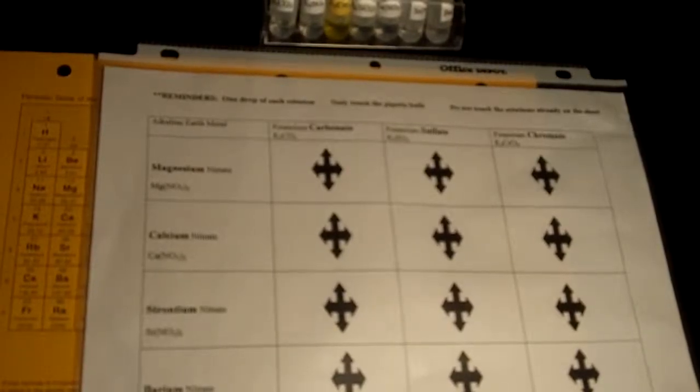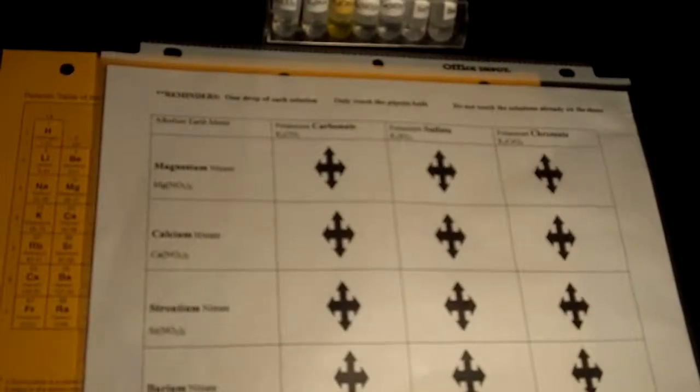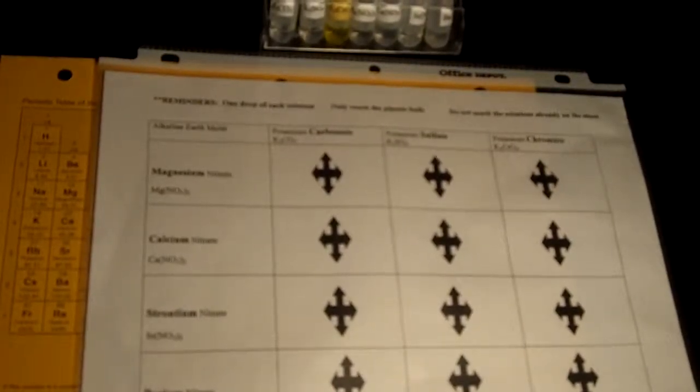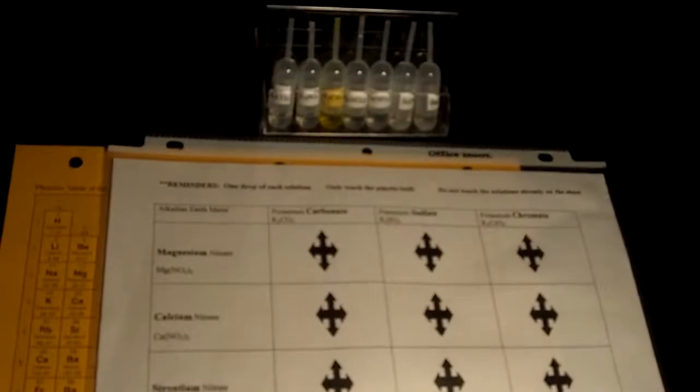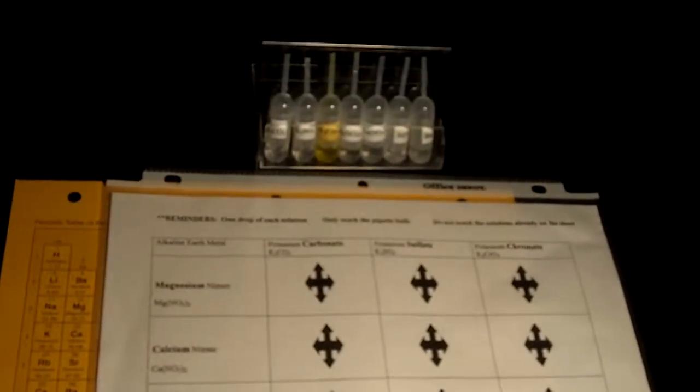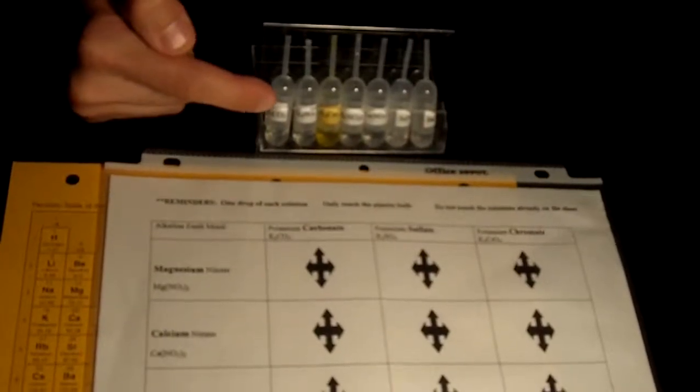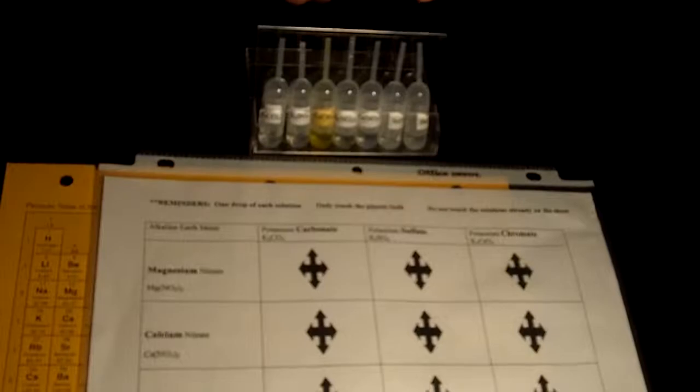The description of the setup. This setup for the lab includes the use of preloaded plastic pipettes with aqueous solutions of 4 alkaline earth metals, as well as 3 potassium compounds you will react with them. We have them here, the potassium compounds and the alkaline earth metal element compounds.